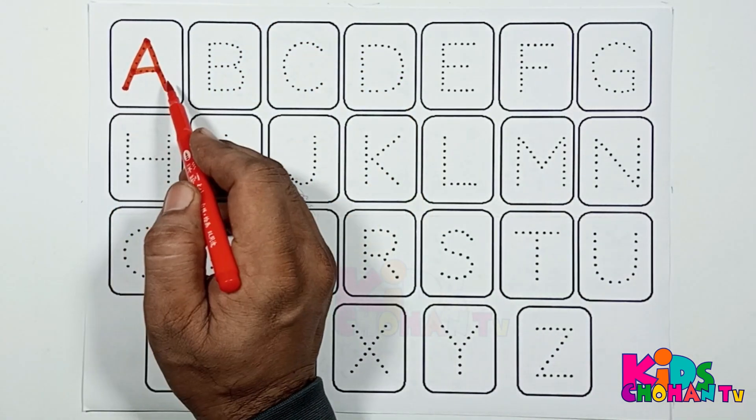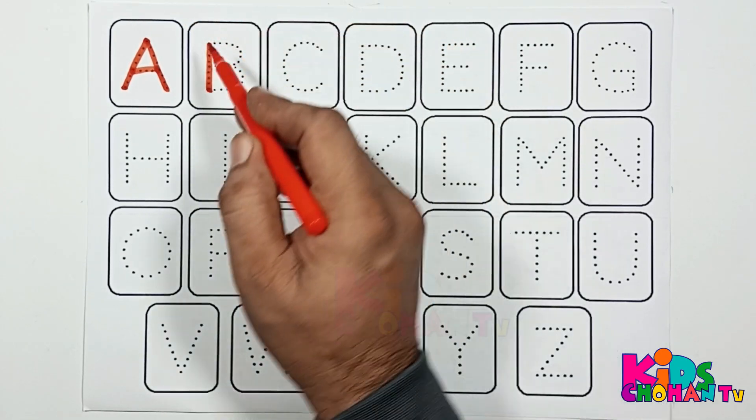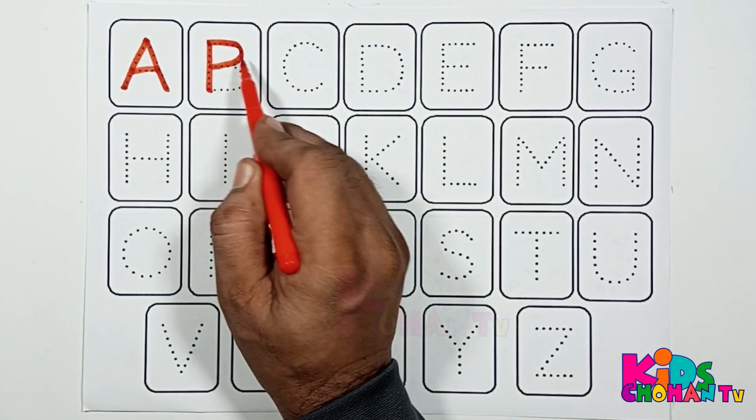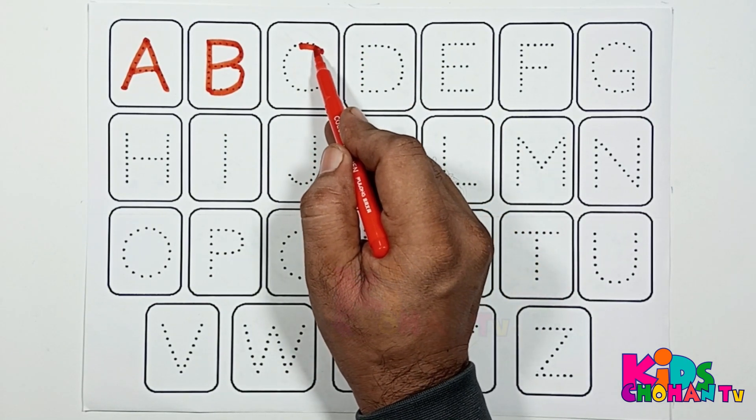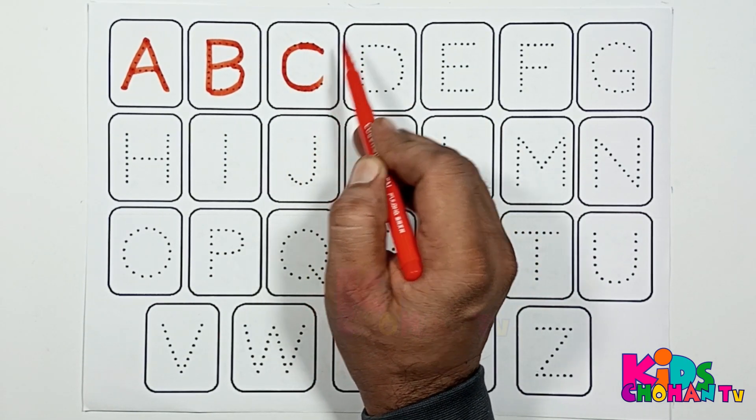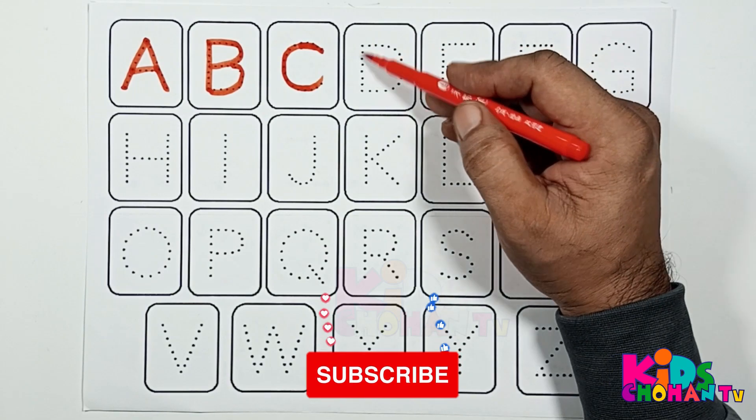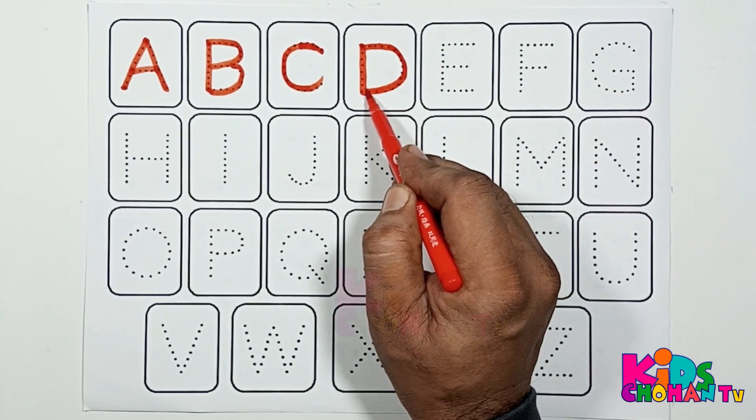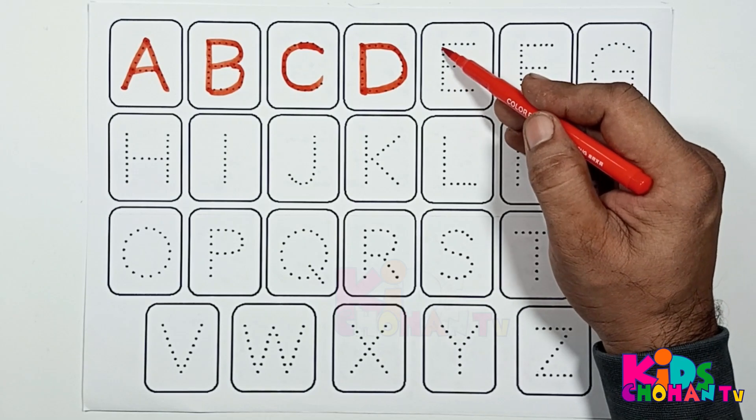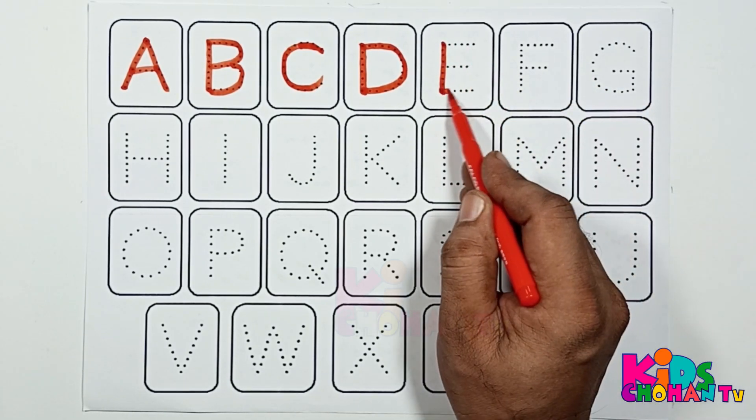A, A for Apple. B, B for Balloon. C, C for Cat. D, D for Dog. A B C D.